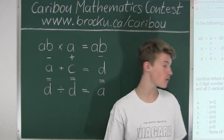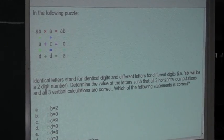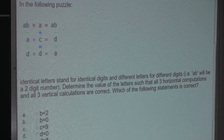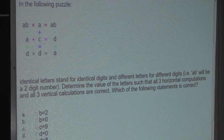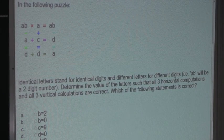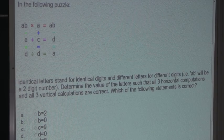The question is: identical letters stand for identical digits, and different letters stand for different digits. For example, AB will be a two-digit number. Determine the value of the letters such that all three horizontal computations and all three vertical calculations are correct. Which of the following statements is correct?